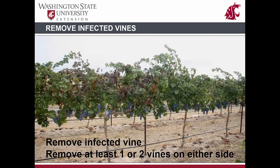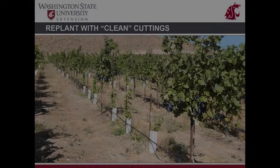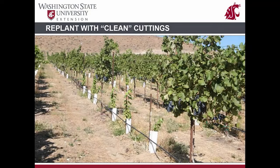In order to avoid the risk of residual infections, it is best practice to simultaneously remove at least one vine on either side of the symptomatic vine. Carry all plant materials — stem, leaves, roots — far away from the vineyard and burn them to ensure complete removal of the virus source within the block.